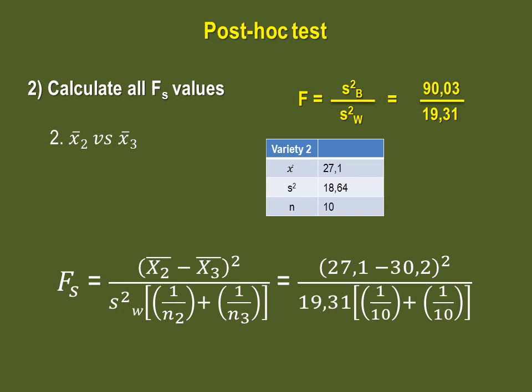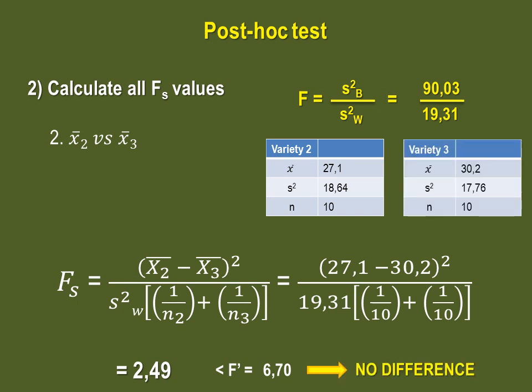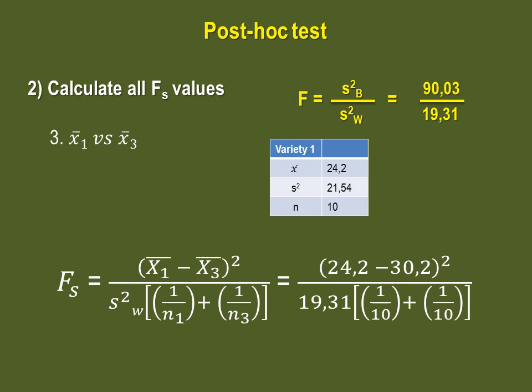We'll continue with sample 2 and sample 3. Because our n's are equal, the only thing that changes in the equation is the values of the means. The F value between sample 2 and sample 3 is 2.49, which is also inferior to our critical value, so there is no difference between sample 2 and sample 3.